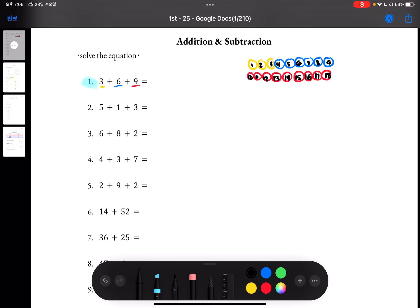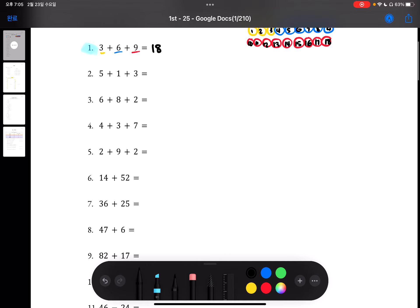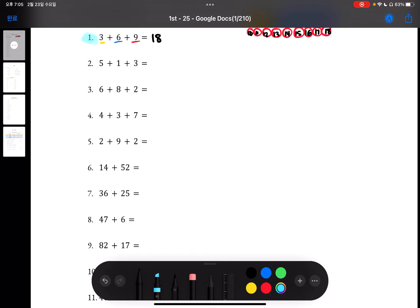So we know that the answer for number one will be 18. Let's look at number seven. Another way you can solve these problems is by using the vertical method, which is lining up the numbers by place values like ones place with ones and tens with tens.